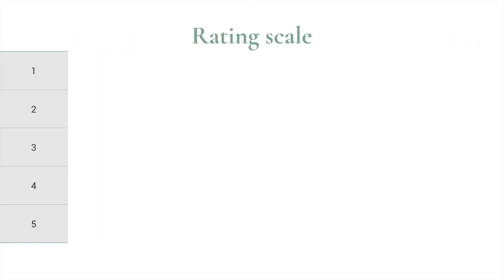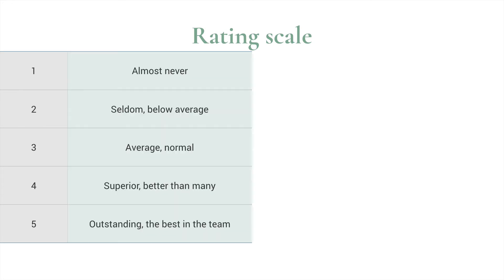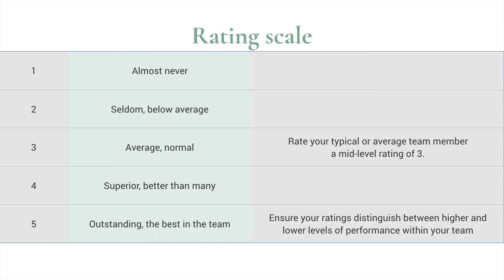In each of these attributes, you'll be rating your team member against a rating scale. The rating scale is a one to five point scale and you'll rate according to almost never at one extreme, average, normal, or outstanding — the best in your team. Typically, you'll be giving most members of your team a mid-level rating of three unless you're a super high-performing team. Just remember to ensure your ratings distinguish between higher and lower levels of performance within your team.